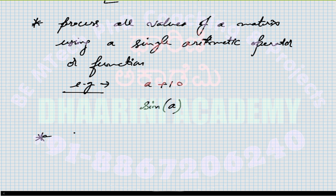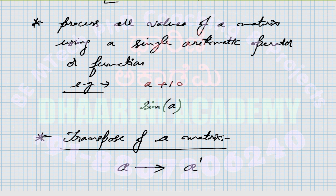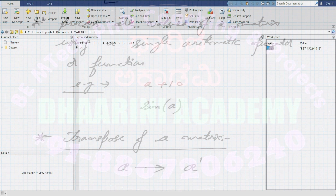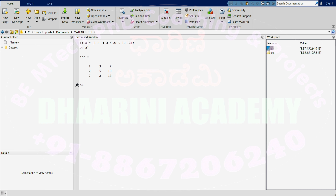The transpose of a matrix in MATLAB is obtained by writing 'a dash' — this converts a into its transpose. For example, if we enter 'a'' you can see that the first row [1, 2, 7] becomes the first column, the second row becomes the second column, the third row becomes the third column. This is applicable for any matrix.